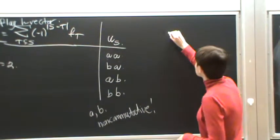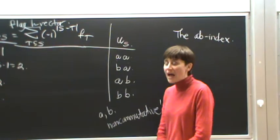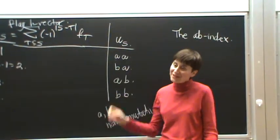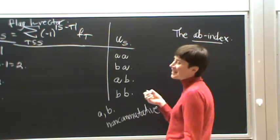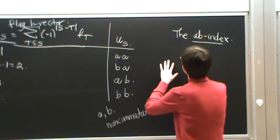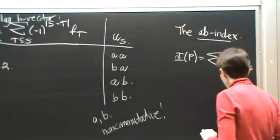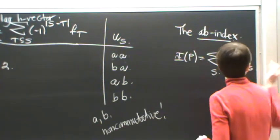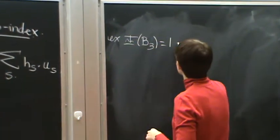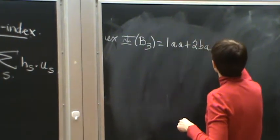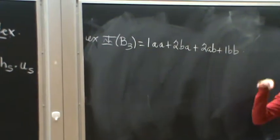Now I'm ready to define the AB index. The AB index for a poset is simply: we use as coefficients these h-values on these monomials. So for example, for the Boolean algebra, its AB index is going to be 1·AA + 2·BA + 2·AB + 1·BB. That is the AB index. Is this okay? Because if you don't get this, I have lost you forever.